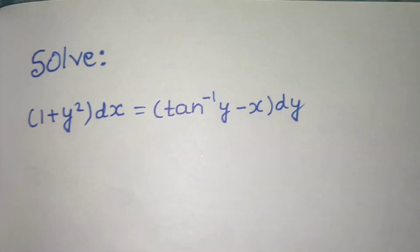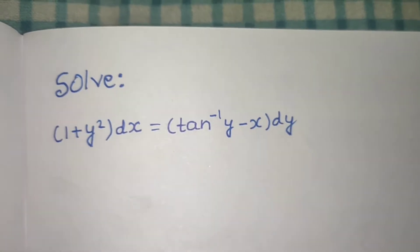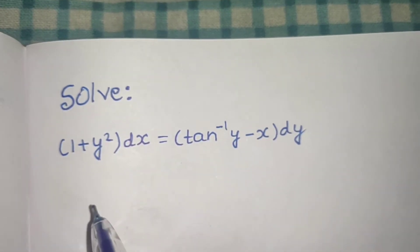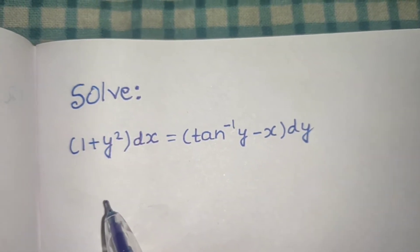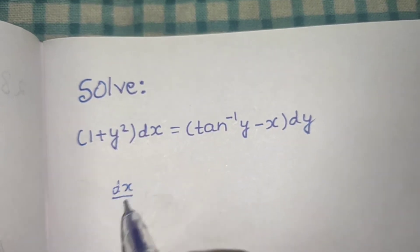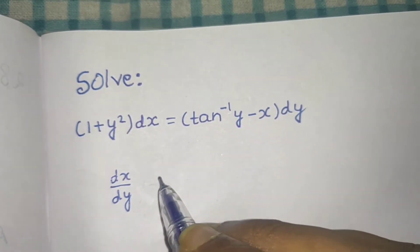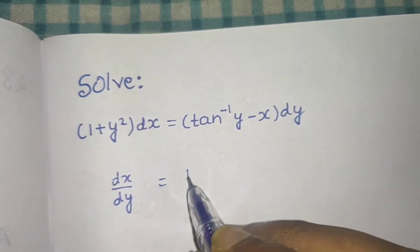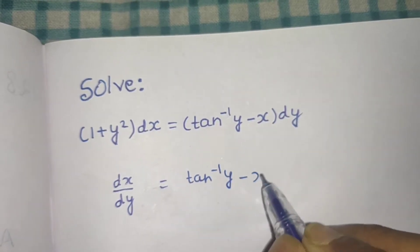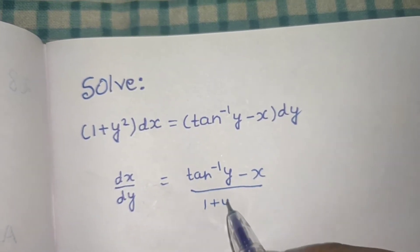Let's see one question from differential equations. I will bring dy to the left-hand side, so I will get dx/dy, and I will send this term to the RHS. So I will get dx/dy equal to tan⁻¹y minus x, divided by 1 plus y².